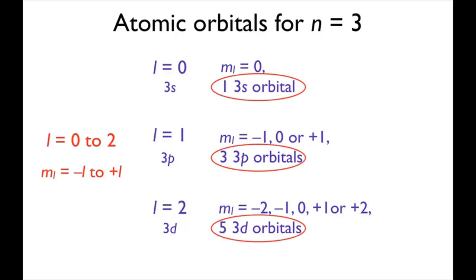So when n equals 3, there's one 3s orbital, three 3p orbitals, and five 3d orbitals.